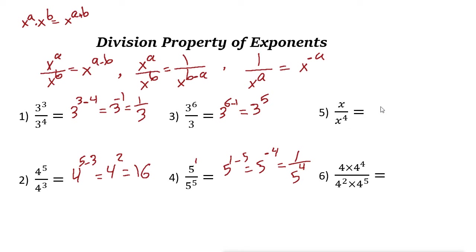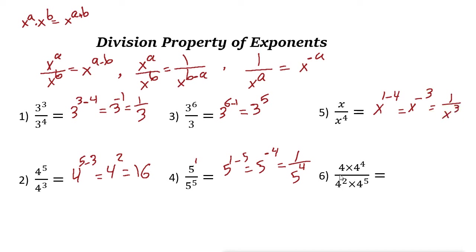The next example is the same idea. The power in the numerator is 1, so it is x to the power of 1 minus 4, or x to the power of negative 3, which equals 1 over x cubed.